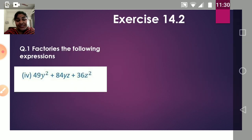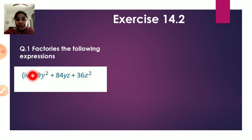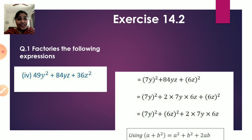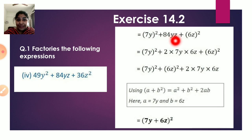Let us begin with exercise 14.2, question number 1 — factorize the following expressions. The fourth sum is 49y² + 84yz + 36z². Observe that 49 is the square of 7, and 36 is the square of 6. So we can write the first term as (7y)² and the last term as (6z)².